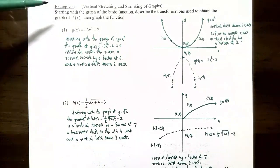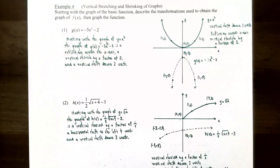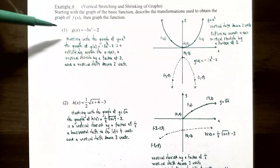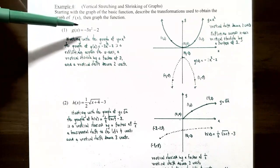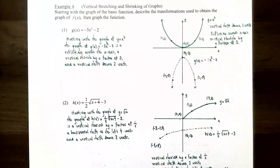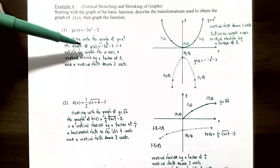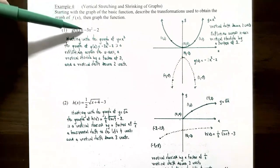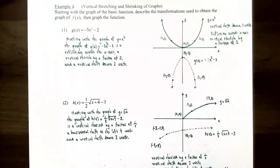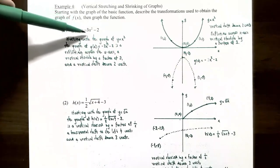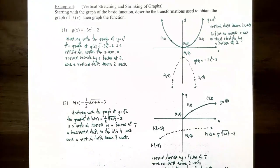In example four, we're going to find what the graph looks like for vertical stretching and shrinking. Start with the graph of the basic function, describe the transformations used to obtain the graph of y = f(x), then graph the function. Number one, g(x) = -3x² - 2. It looks like we're starting with the basic function y = x². There's a reflection because of the negative sign in front of x², a vertical stretch by a factor of 3 because of the 3x², and the negative 2 will shift the graph down 2 units.